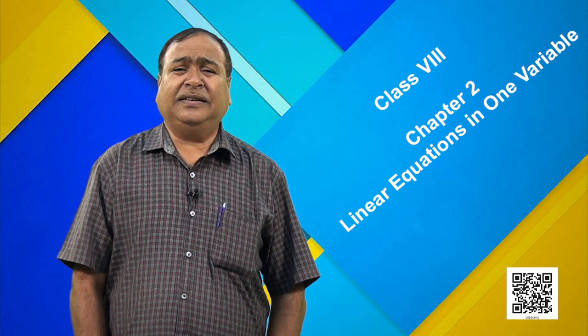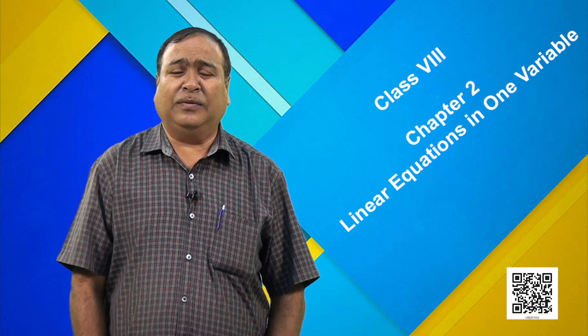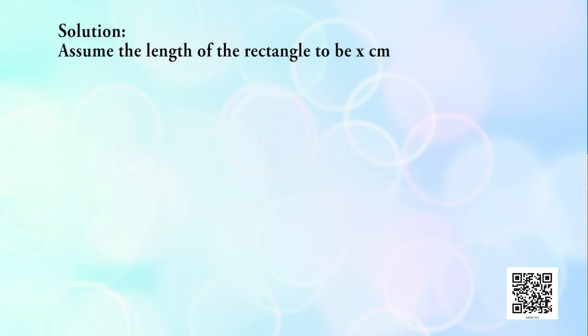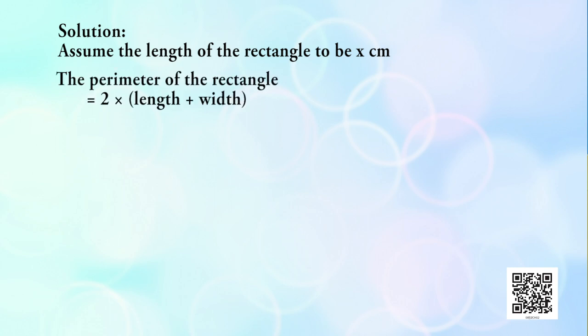Students, now let us look at some word problems involving the above type. Problem 1: the perimeter of a rectangle is 13 centimetres and its width is 2¾ centimetres. Find its length. To solve this problem, let us assume the length of the rectangle to be x centimetres. The formula for the perimeter of a rectangle is 2 × (length + width).